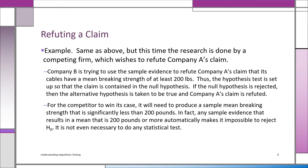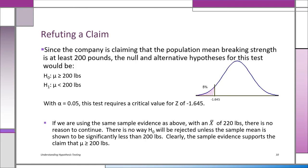Now, when somebody wants to refute a claim made by a company — say it's the competition or government — they're going to put the claim in H0. H0 becomes the claim. They collect sample evidence trying to refute the claim, but H0 is the company's claim. The competition is trying to refute the claim of the cable company. The company claimed the cables have a breaking strength of 200 pounds, so H0 is that mu is greater than 200 pounds — that's the claim, and notice it's in H0.